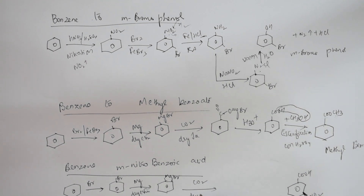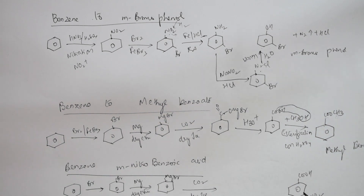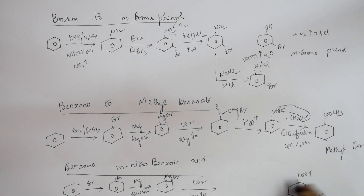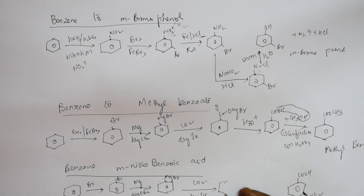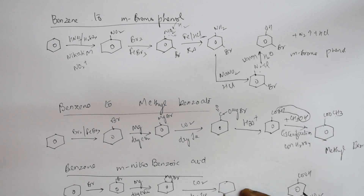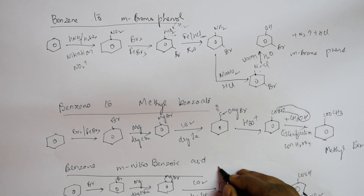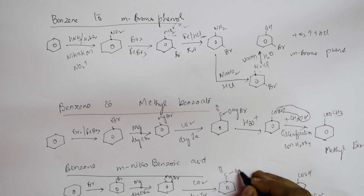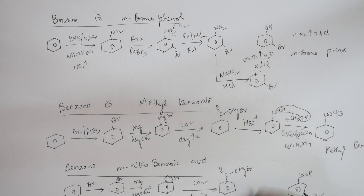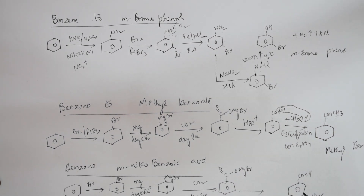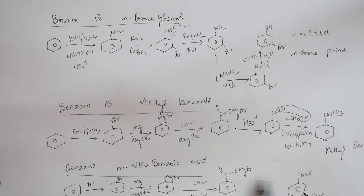From the Grignard's reagent, add CO2 (dry ice) to introduce the carboxyl group. This gives COOMgBr as an intermediate. Gradually we are building toward the COOH group.